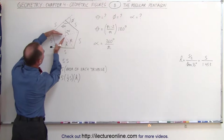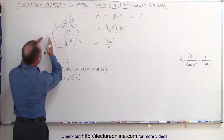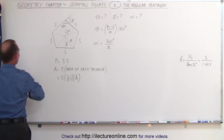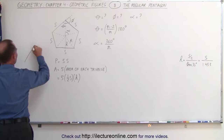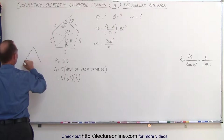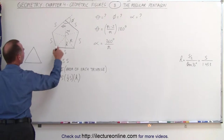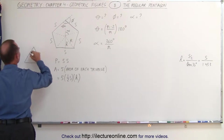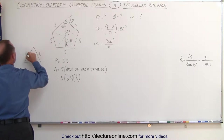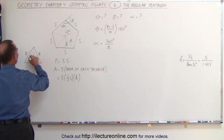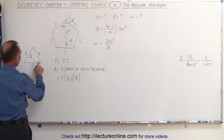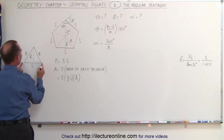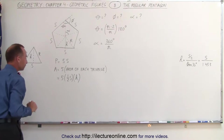Imagine taking one of these triangles out — it would look like this. The two equal sides are called r, the base is called s, and the height is called h. The area of this triangle is half the base times the height.